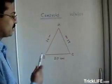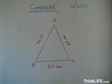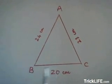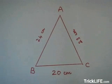For example, we have here a triangle ABC in which AB is 24 cm, BC is 20 cm and AC is 23 cm.